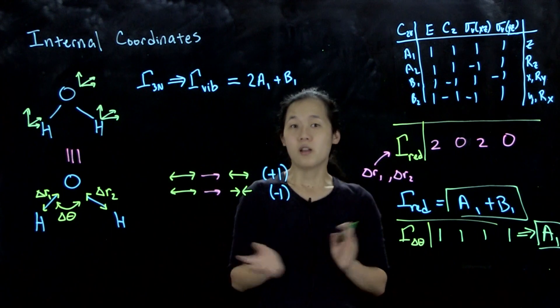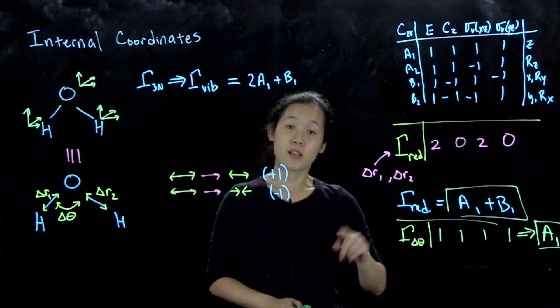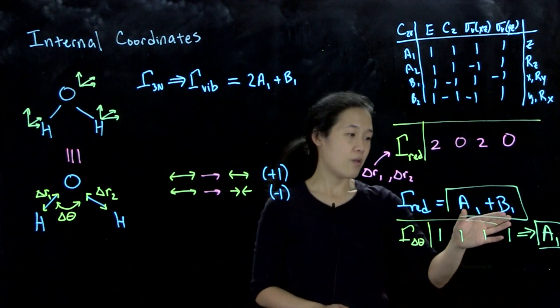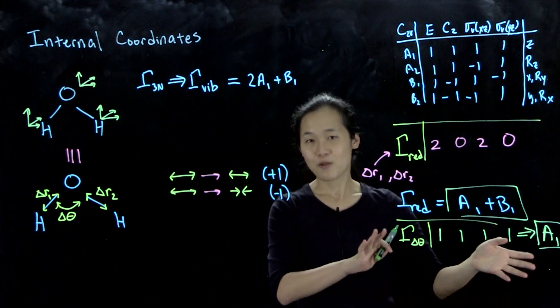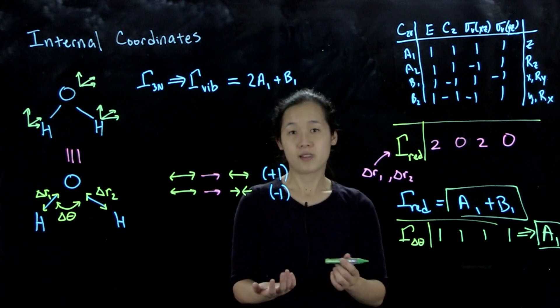So you can use either one, though this one is slightly easier. Starting next week, we'll talk about how we can use A1 and B1 - these are just labels right now - but we can use them to actually visualize what the vibrations look like in space.